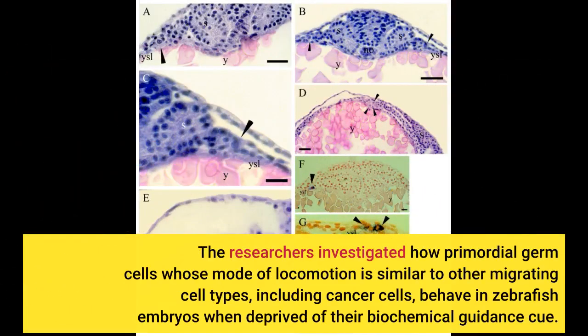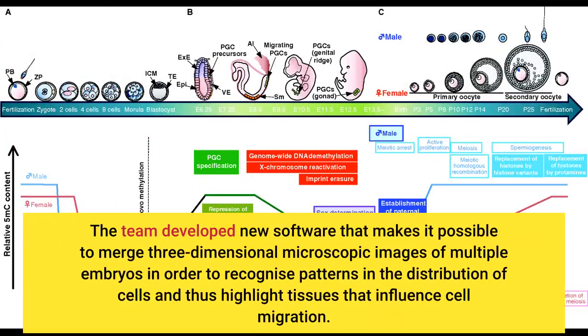The researchers investigated how primordial germ cells — whose mode of locomotion is similar to other migrating cell types, including cancer cells — behave in zebrafish embryos when deprived of their biochemical guidance cue. The team developed new software that makes it possible to merge three-dimensional microscopic images of multiple embryos in order to recognize patterns in the distribution of cells and thus highlight tissues that influence cell migration.